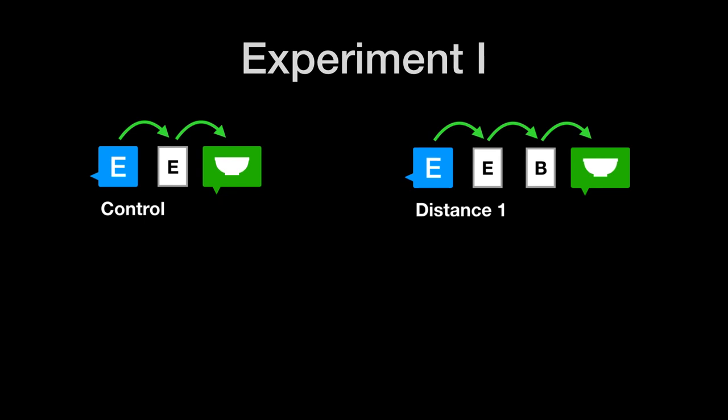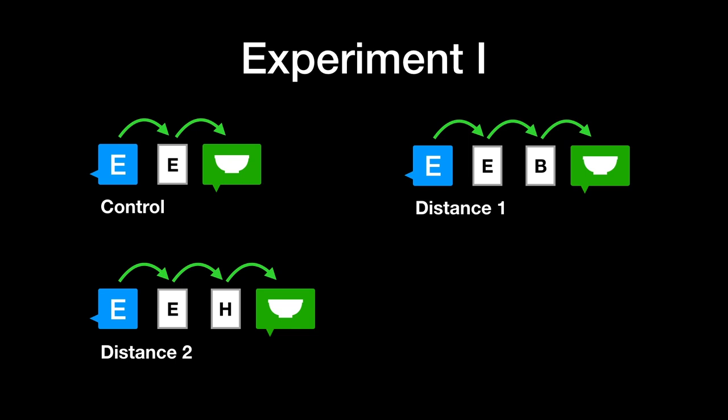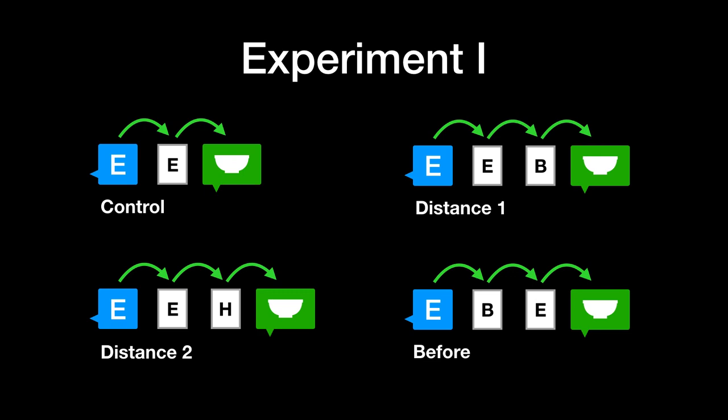In experiment 1, we compared against two additional videos: one where the robot detours to a box much further away, and another in which the robot checks the off-task box before checking the goal box.